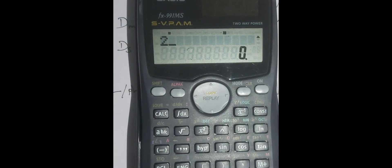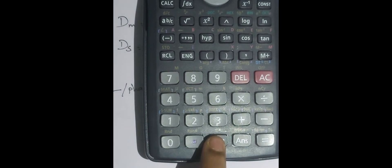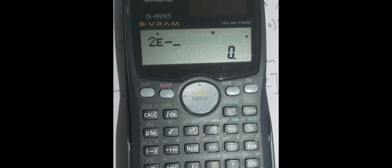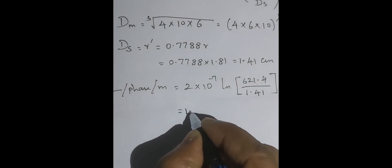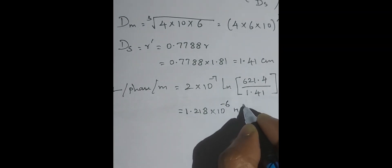Substituting: inductance per phase per meter = 2 × 10⁻⁷ × ln(621.4 / 1.41). Using the calculator — press the exponential button to enter e to the power −7, then multiply by ln(621.4 / 1.41), close the parenthesis. You will get 1.218 × 10⁻⁶ Henry per meter.